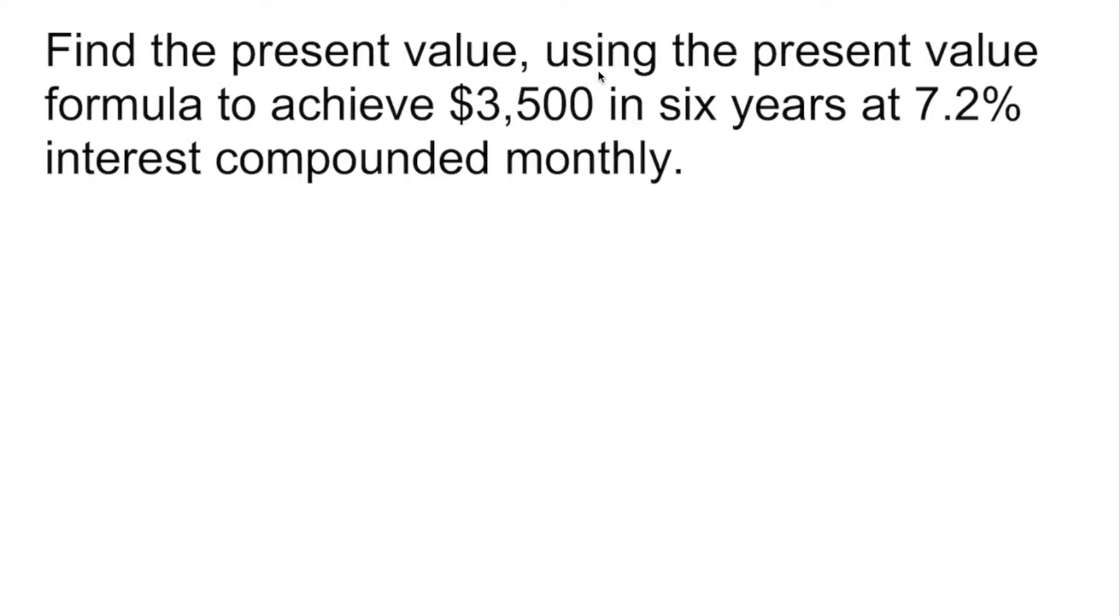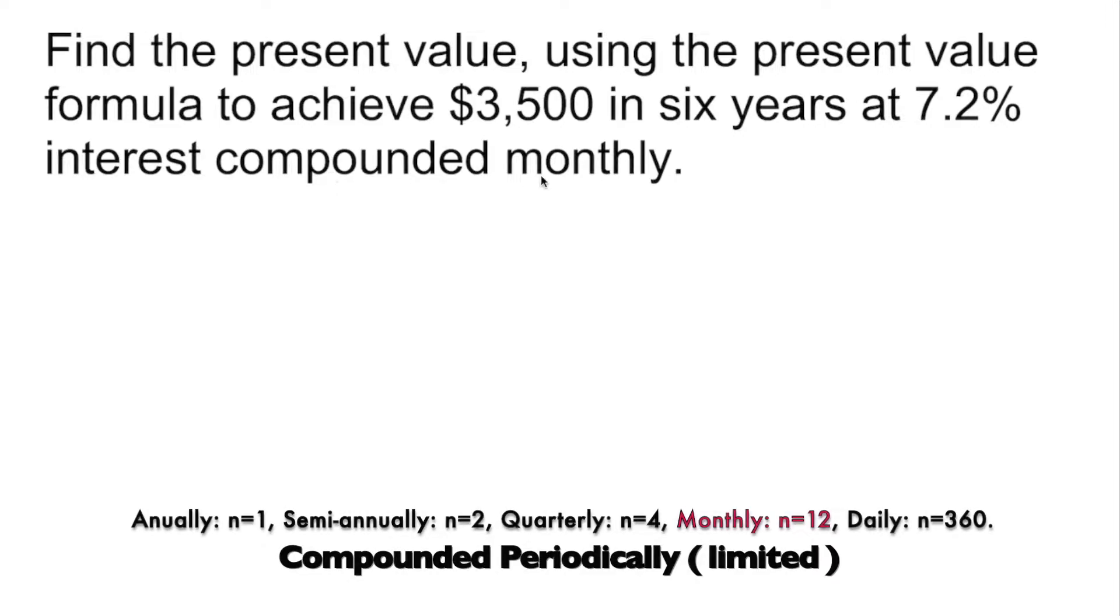Find the present value using the present value formula to achieve $3500 in six years at 7.2% interest compounded monthly. This is compounded theoretically, so monthly means n equals 12.